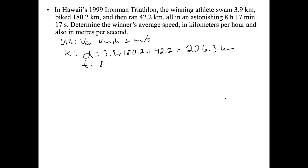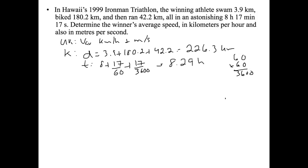Time equals 8 hours plus 17 over 60 (for the 17 minutes) plus 17 over 3600 (because 60 seconds times 60 minutes gives 3600 seconds per hour). Put that in your calculator and you get 8.29 hours.